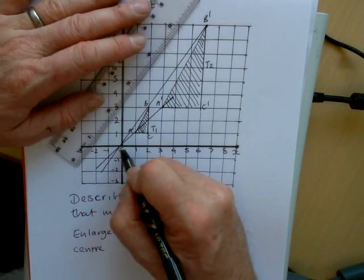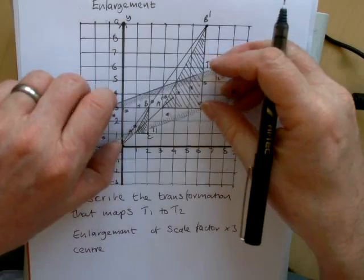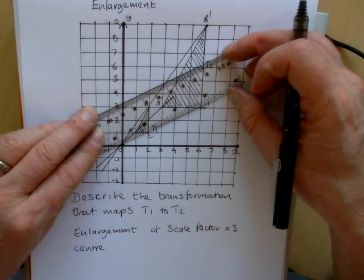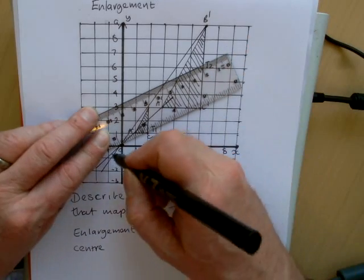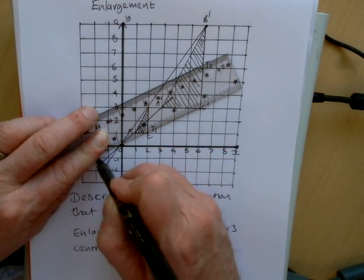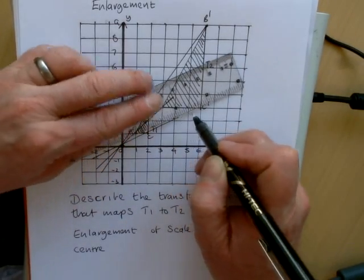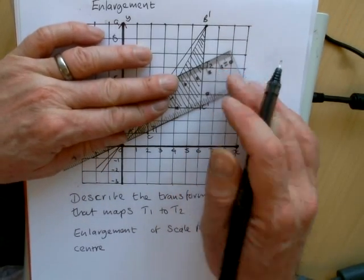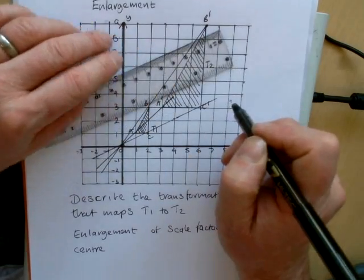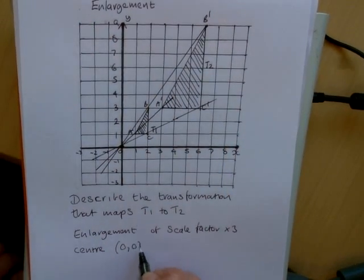That shows you that it's enlarged through the origin. If you go through C and C dash just to check, you'll see that all the lines pass through that same point, (0, 0). And that is, in this particular case, the centre of enlargement. So we'll put centre (0, 0).